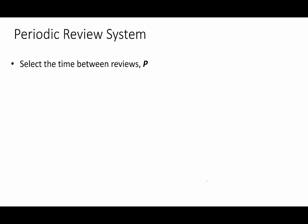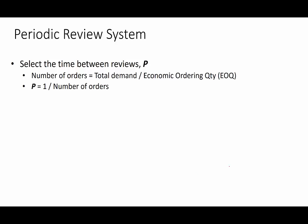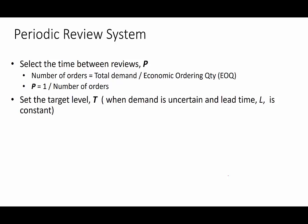To summarize the periodic review system: the first step is to select the time between reviews — whether once a week, once in two weeks, or three weeks. One can use the economic order quantity and the annual demand to determine the number of orders; taking the reciprocal gives the time between reviews. Once P is calculated, we can set the target level T, which is made of two components: average demand and safety stock.